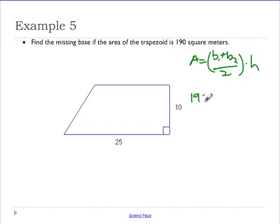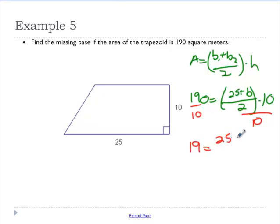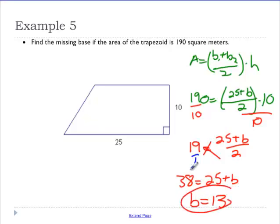Area is 190. 190 equals base 1 is 25 plus base 2, I don't know, divided by 2, times the height, which is 10. I'm going to divide both sides by 10. So, I got 19 equals 25 plus the base over 2. We're going to think of this as over 1 to cross-multiply. Essentially, I'm multiplying both sides by 2. So, 38 equals 25 plus the base. I subtract 25 from both sides. Get that the base is 13.